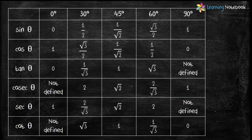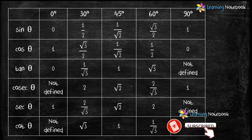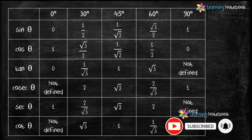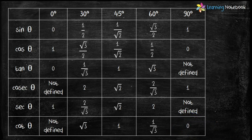So now we have found trigonometric ratios of 0°, 30°, 45°, 60°, and 90°. This table is very useful in solving trigonometric questions. In the next video I will tell you a trick to remember this table. Thanks for watching — if you enjoyed this video, hit the like button, subscribe to our channel Learning Notebook, and press the bell icon. Thank you, bye, see you in the next video.